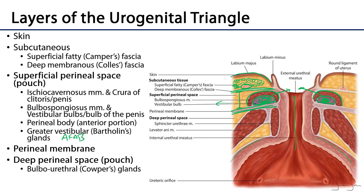Then there's the perineal membrane, and deep to that is the deep perineal space. That deep perineal space is bounded by the pelvic diaphragm and includes some of the compressor urethrae muscles, as well as, in assigned-male-at-birth individuals, the bulbourethral glands or Cowper's glands. Bulbourethral glands and greater vestibular glands are homologous with one another — an individual will have one or the other — and they serve the same function of providing lubrication.